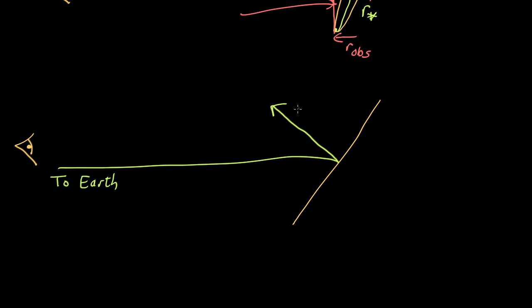And this here is the axis of rotation, which is perpendicular, right angles to the actual orbital plane. And this is the inclination angle as normally used by astronomers.